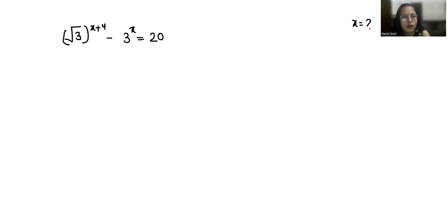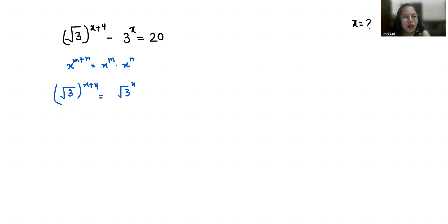According to the exponent rule, x power m plus n can be written as x power m times x power n. So root 3 power x plus 4 can be written as root 3 power x times root 3 power 4. So we replace this to get root 3 power x times root 3 power 4 minus 3 power x equals 20.